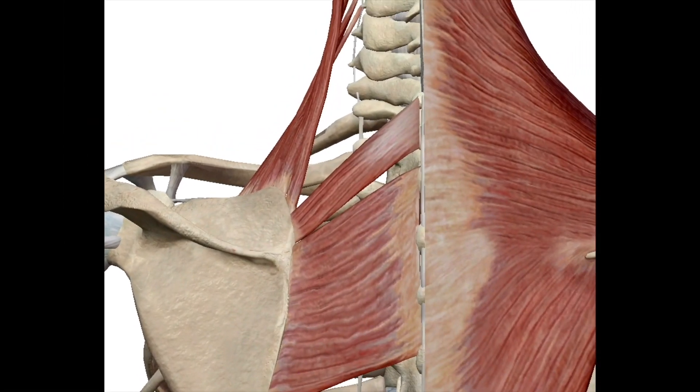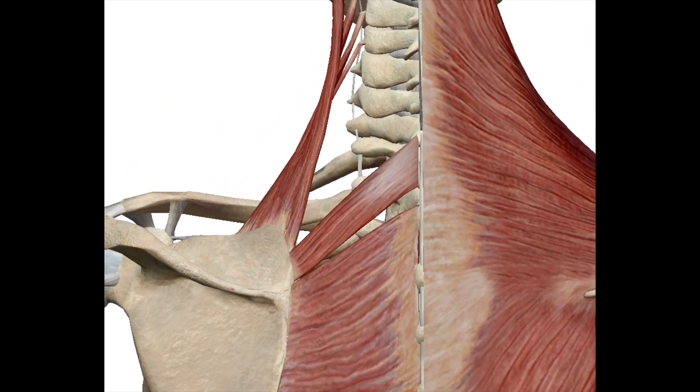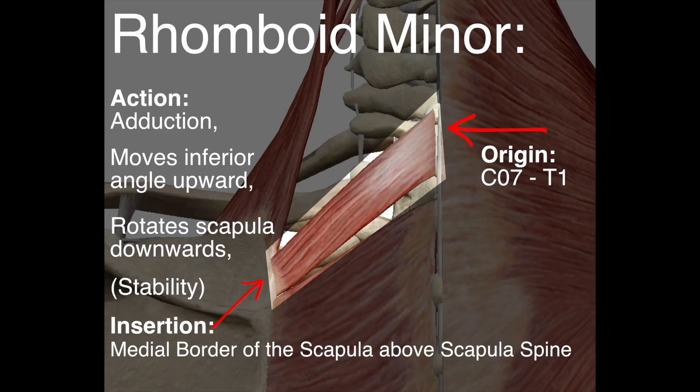Let's move on to the rhomboid minor. You'll find that it is superior to the rhomboid major. It originates at C7 and T1, and inserts into the medial border of the scapula again but above the scapula spine.